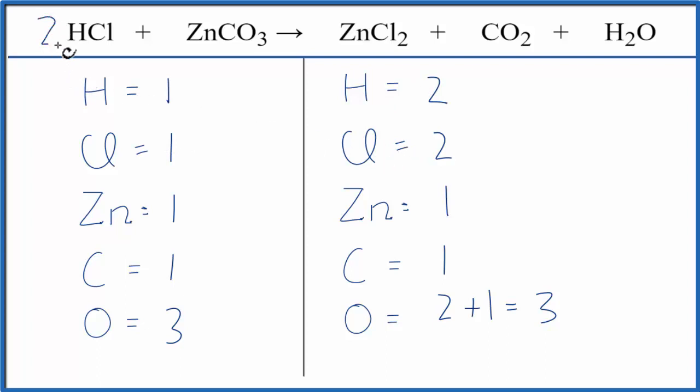So we could do that by putting a 2, a coefficient of 2, in front of the HCl. The 2 applies to everything, so we have one hydrogen times the 2. That'll give us two of those, so those are balanced. Chlorines, one chlorine times the 2, gives us two of those. Those are the same, and we're done.